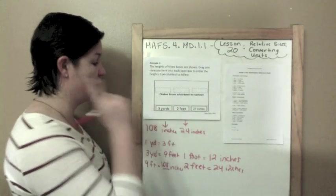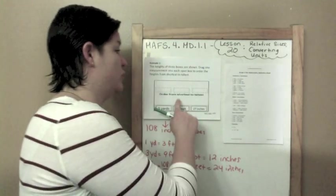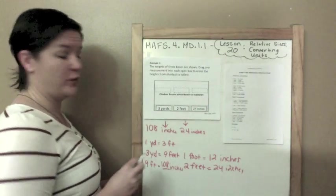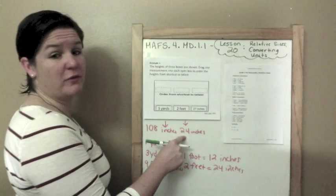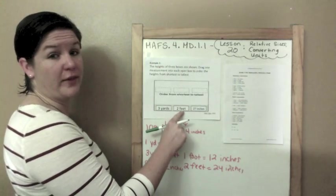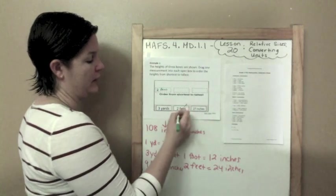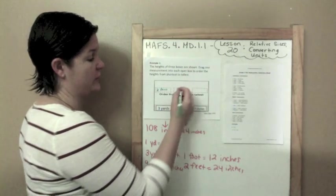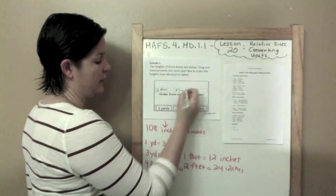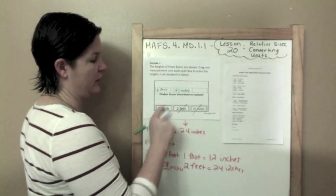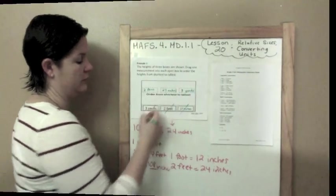And now all I have to do is order these from the smallest, sorry, the shortest to the tallest. So this shortest one would be 24 inches, but I'm not writing 24 inches. I need to write the unit that they gave me, 2 feet. Okay, next would be 27 inches. And our big guy over here would be 3 yards.